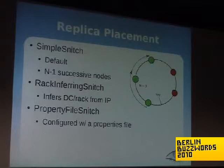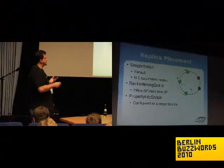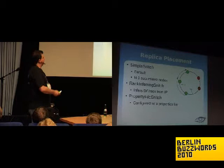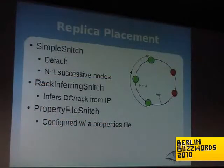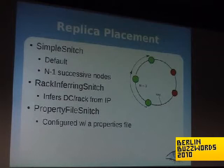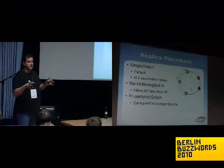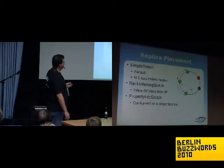Placement of additional copies is also pluggable — we do this with what's called an endpoint snitch. The default takes the next N-1 successive nodes around the ring. But we have a rack-inferring snitch where you adopt a convention in assigning IP addresses and it will infer both rack locations within a data center or entire data center locations, spreading copies across those. Or you can use a property file snitch, specifying them as key-value pairs in a Java properties file. One Cassandra user wrote an endpoint snitch for Amazon EC2 to distribute replicas across regions.